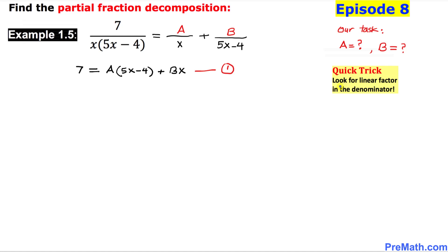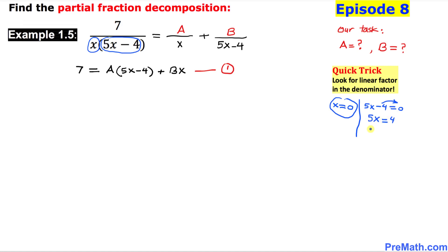Now let's look at this quick trick: look for the linear factors in the denominator. We have one linear factor x and another linear factor 5x minus 4. Let's set both of them equal to 0. Setting x equal to 0 gives us one value, and setting 5x minus 4 equal to 0 gives 5x equals 4, so x equals 4 over 5. So we have two x values.